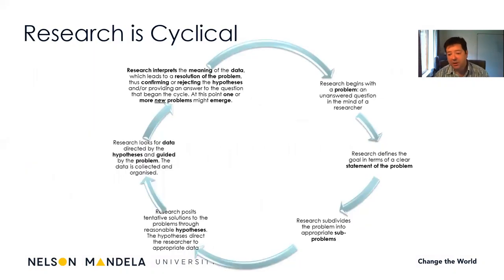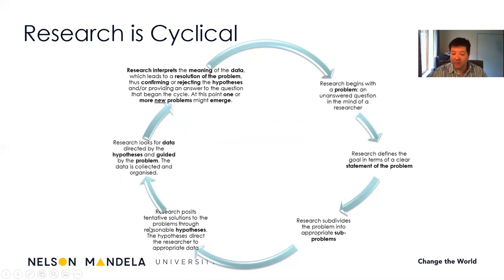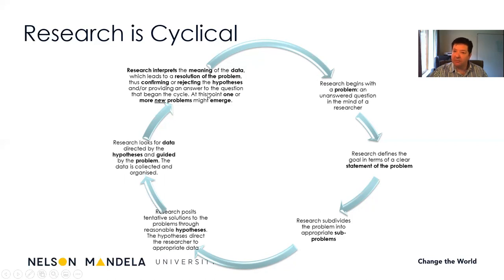This is normally what I give my honours students. We start off with a research problem — an unanswered question. Research defines the goal as a clear statement of the problem, divided into smaller sub-problems. If you have a quantitative study, then you will have a hypothesis, which is an educated guess coming from the literature — a possible solution or reason why that problem exists. From there, you analyze and gather the data, interpret it, and from that interpretation, there might be more problems coming out. So you might solve your original problem, but something new might emerge.